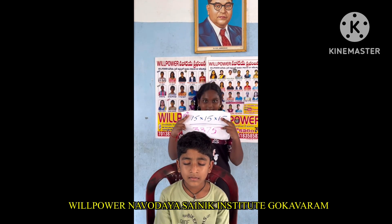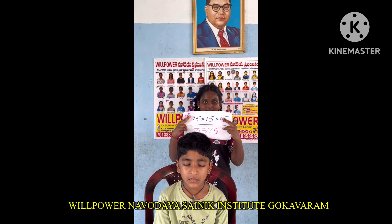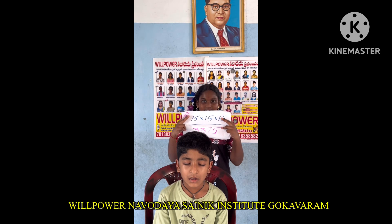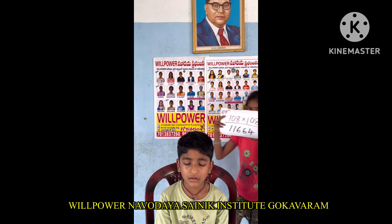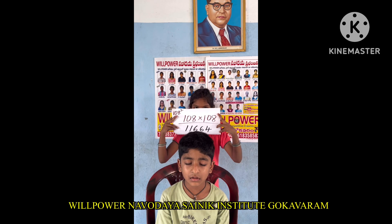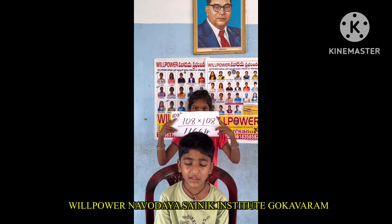15 cube: 15 into 15 into 15 — 3375. Okay, good. Next. 108 square: 108 into 108 — 11664. Okay.